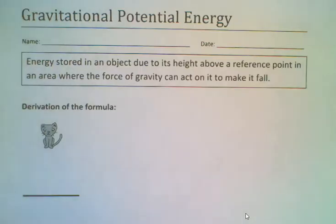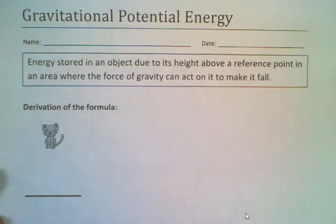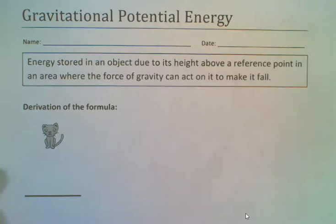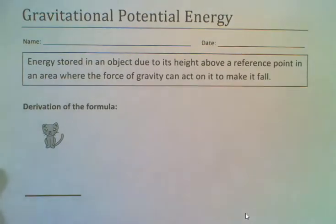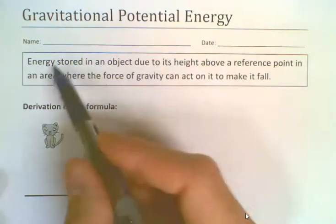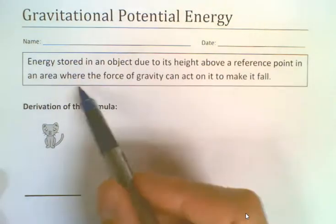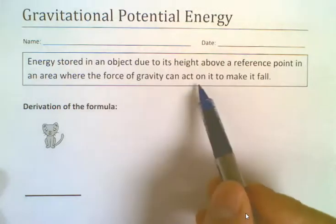In this video we're going to look at gravitational potential energy and figuring out how much energy is stored in an object when it's at some position above the ground or above some reference point. The energy stored in an object due to its height above a reference point in an area where the force of gravity can act on it to make it fall.